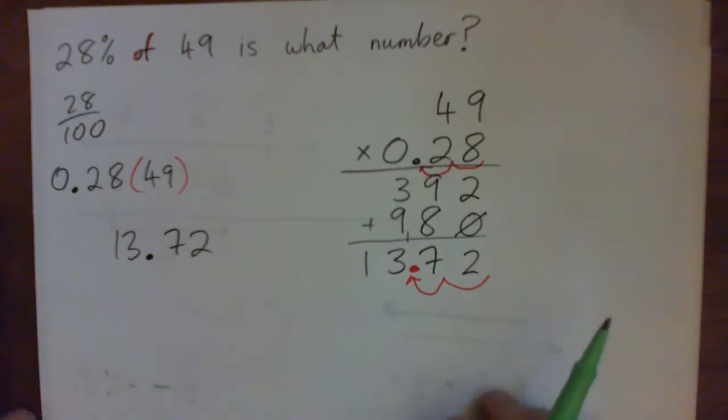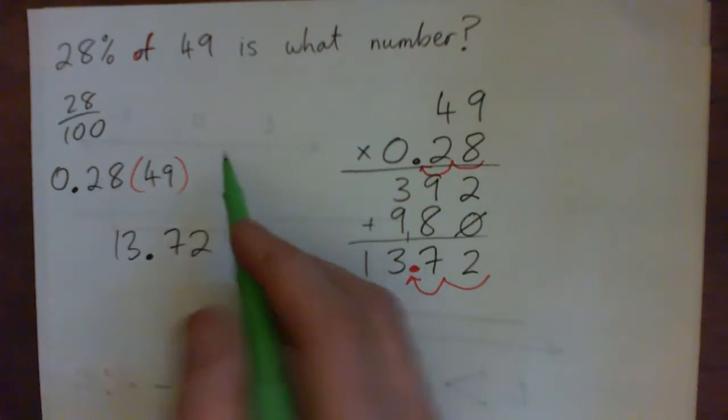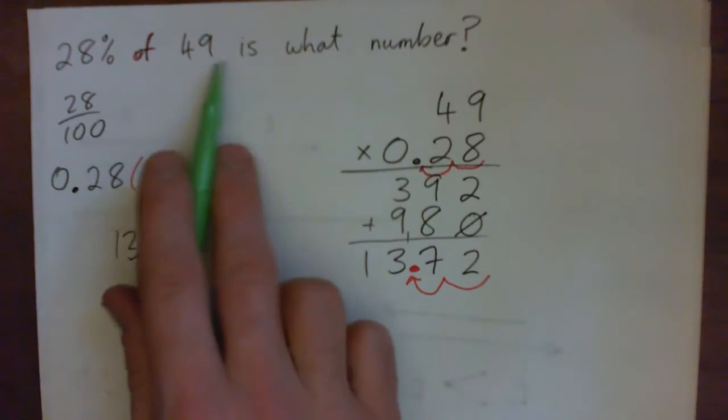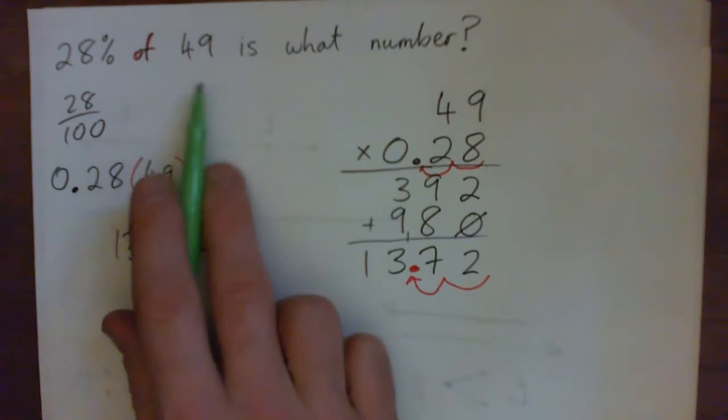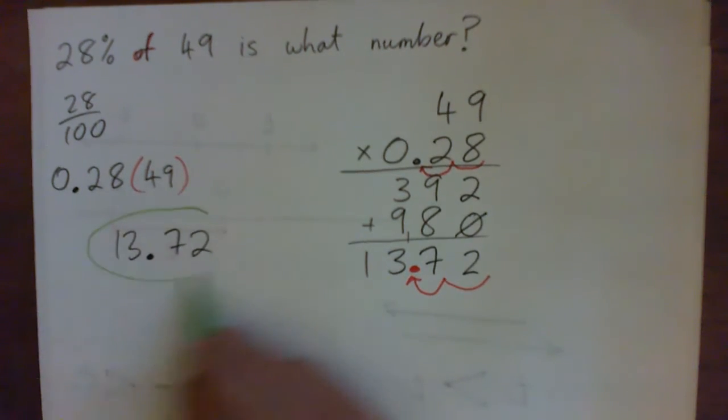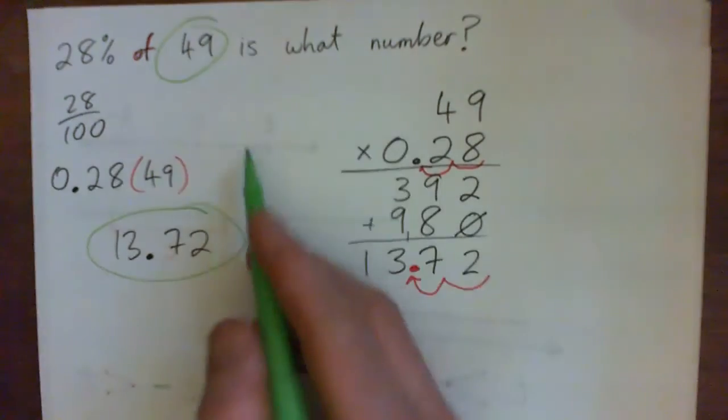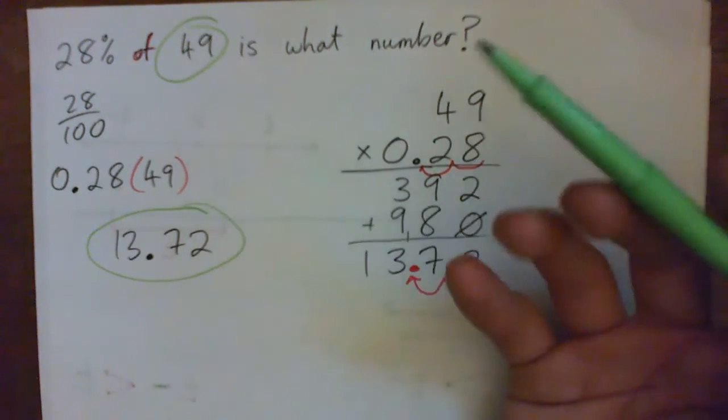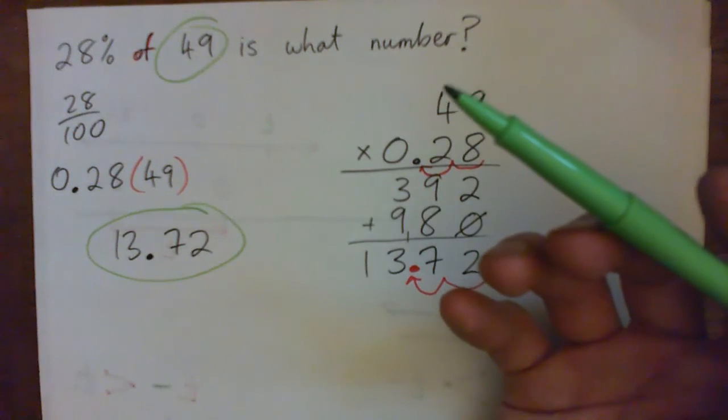And the only thing I'll ask everyone, yourself and anyone watching from home, is like 28%, if you get 28% of something, the answer is going to be less than that number, right? Do you know what I mean? So this is definitely less than 49, isn't it? So it looks kind of right, doesn't it?